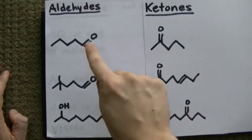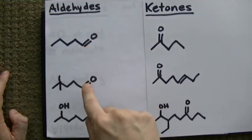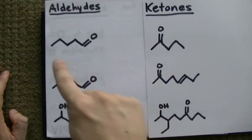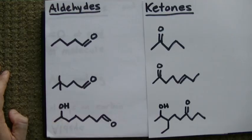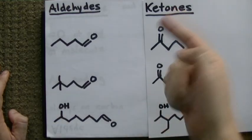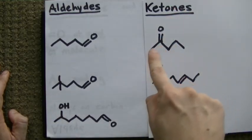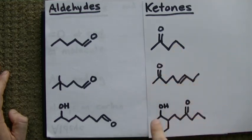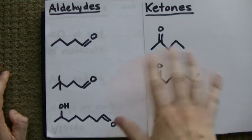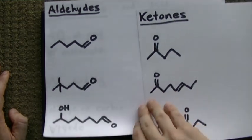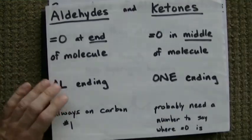For aldehydes, the double bonded oxygen has to be at the very end of the molecule. Now these are all on the right side, it could have just as easily been on the left side. Whereas for ketones, the double bonded oxygen is somewhere in the middle of the carbon chain. Here it's on the second carbon, it looks like it might be on the fourth one here. In any case, all double bonded oxygens mean it's an aldehyde or a ketone.